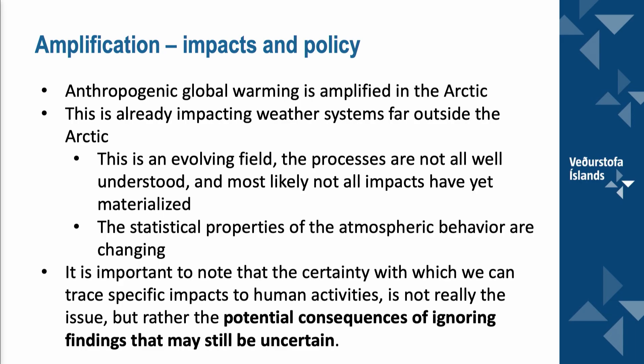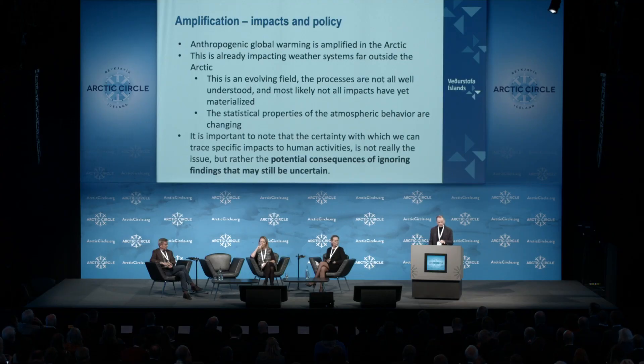To sum up — both the impacts and policy implications: anthropogenic global warming is amplified in the Arctic, and this is already impacting weather systems far outside the Arctic. This is an evolving field, and especially for the wintertime, we do not fully understand all the processes — some impacts haven't yet been quantified or materialized. Part of the problem is insufficient data, and even where we have good data, the statistics are changing. But it's important to note that even though there is scientific uncertainty about exactly how things will play out, policymakers can't really wait. It's not the certainty of what will happen, but rather the potential consequences of ignoring findings that may still be uncertain.